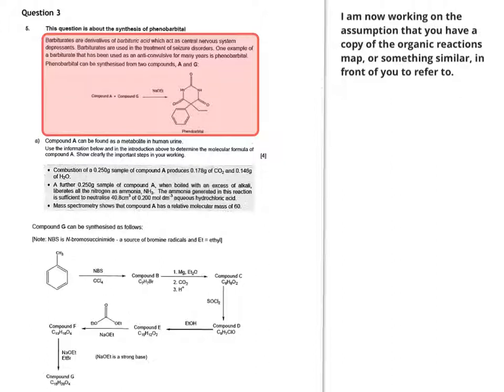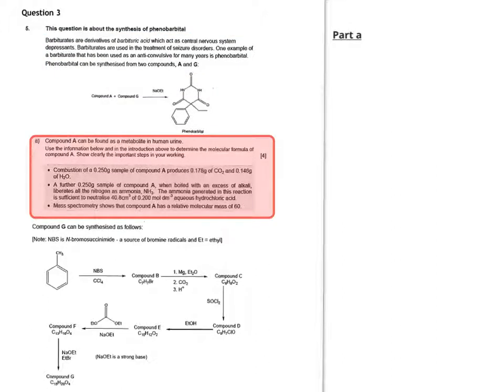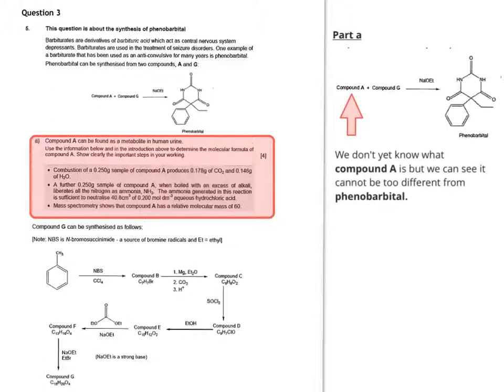Let's get started on question A. It says that compound A can be found as a metabolite in human urine. Although we have no idea at this point what compound A actually is, we know it can't be terribly different from phenobarbital because it reacts with compound G in the presence of sodium ethoxide to make phenobarbital.